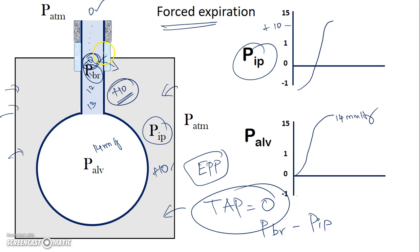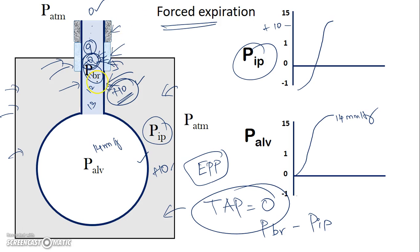The importance of the equal pressure point is that just upstream of this point, the airway pressure becomes less than the intrapleural pressure, so the external pressure is higher and may compress the airways. In a normal individual, the EPP occurs within airways that have cartilage or bony support. However, in people with higher airway resistance, the pressure drops more steeply, and the EPP occurs within the smaller, unsupported airways.